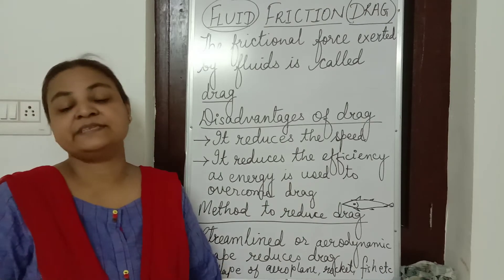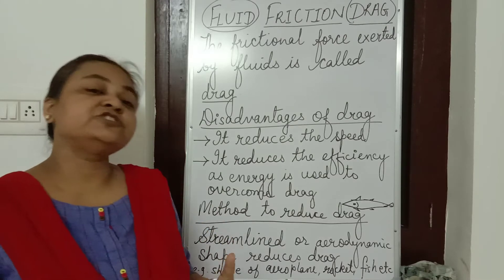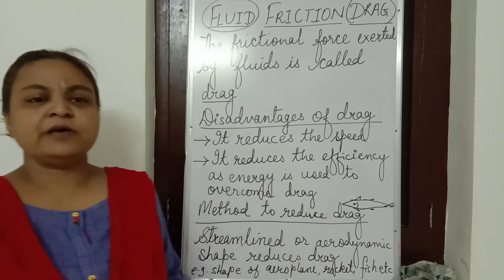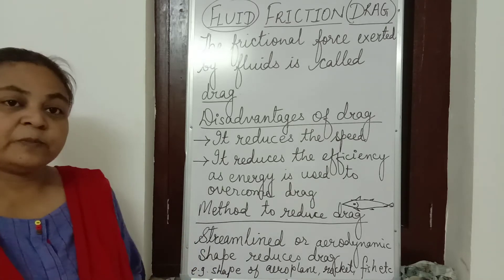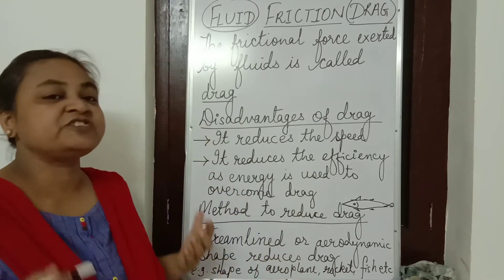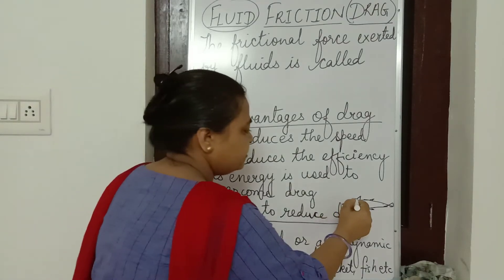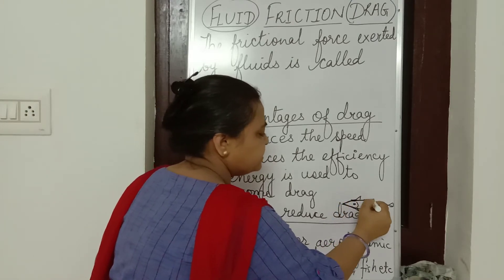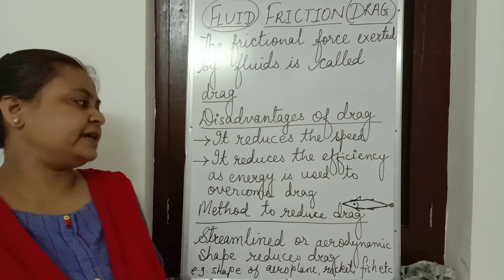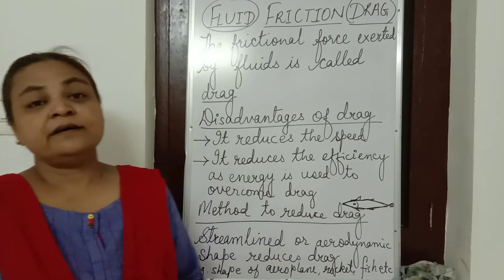Now how can we minimize this drag? Because in high speed objects, when we need that our vehicle should attain very good speed — like in sports cars, aeroplanes, ships, boats and all — we want the speed to be more. We can attain that speed by changing the shape, making the shape streamlined or aerodynamic. It is like tapering on both ends. You can see this fish — it is tapering on both ends, thin in the front and back also, and thick in the middle. So a streamlined or aerodynamic shape reduces the drag.